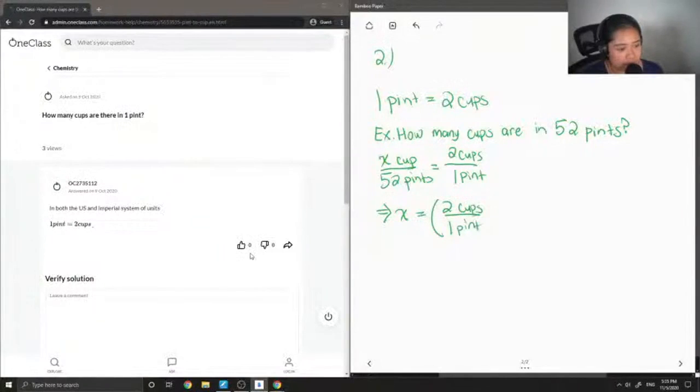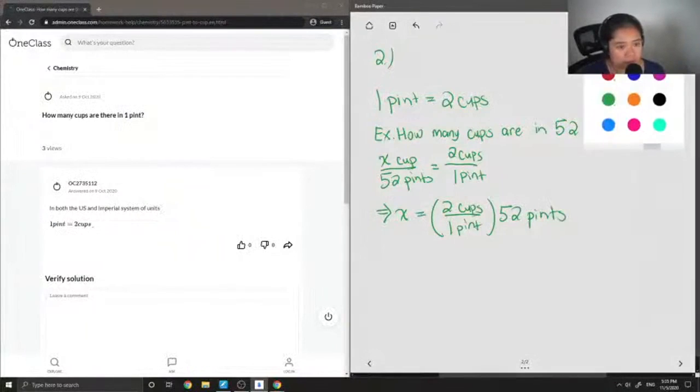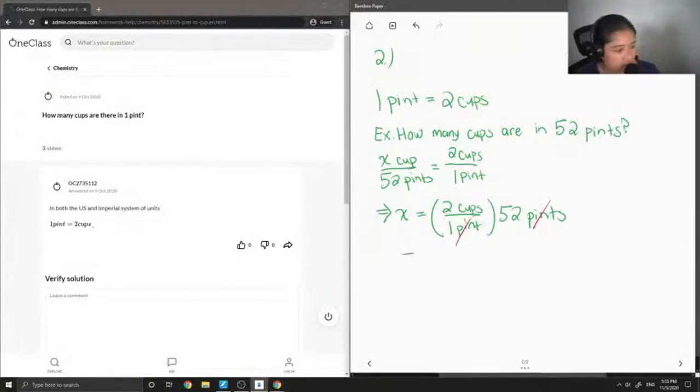And you know that you did it right if your units cancel out nicely. So you'll notice our pints cancelling out, and we're left with a value in cups. So this gives us x is equal to 2 times 52, which is 104 cups.